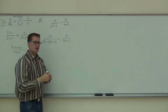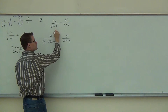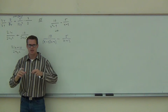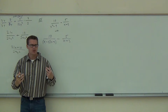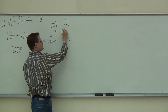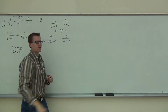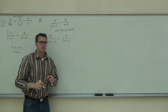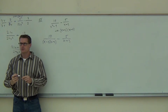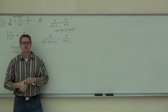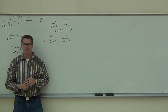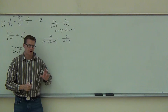We spent a lot of time finding the LCD. The LCD is the largest power of each different factor considering all of our denominators. What are the different factors you see? X plus 3 is there. Your LCD has to be able to cover each of the denominators' factors. Does it have an x minus 3? Does it have an x plus 3? Yes—it covers both.